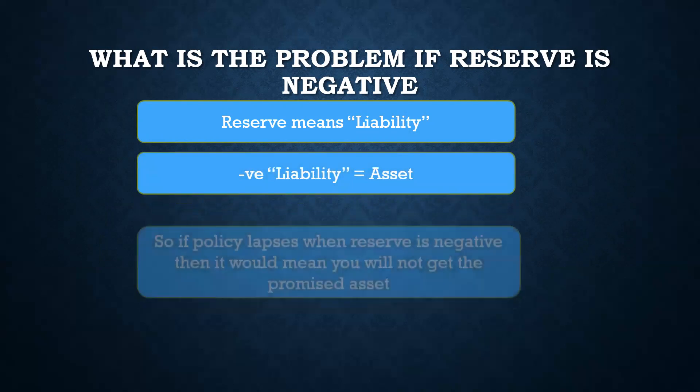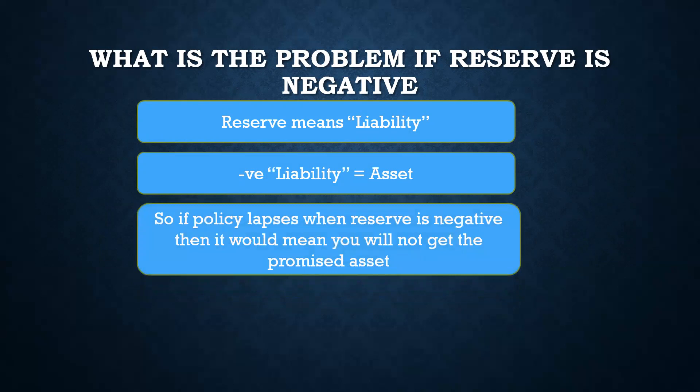So if your reserve is negative, then that means the reserve is effectively an asset. If the policy lapses when the reserve is negative, then that means you would not get the promised asset, because the reserve is something you are keeping for future use. If reserve is negative, then it is an asset which you are supposed to get in the future but have not yet received. So if your reserve is negative and the policy lapses for some reason, then you would not be getting that asset — meaning you are losing asset if it lapses.